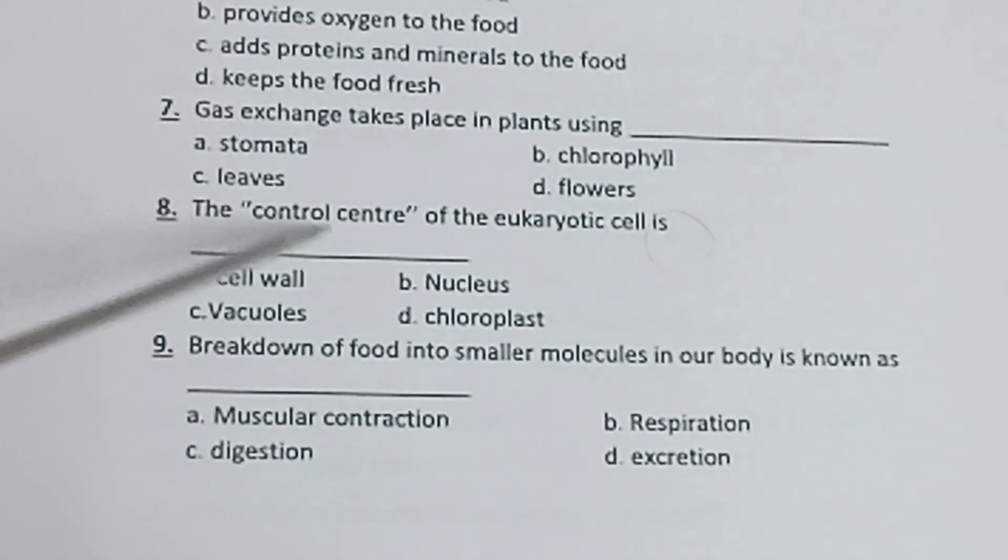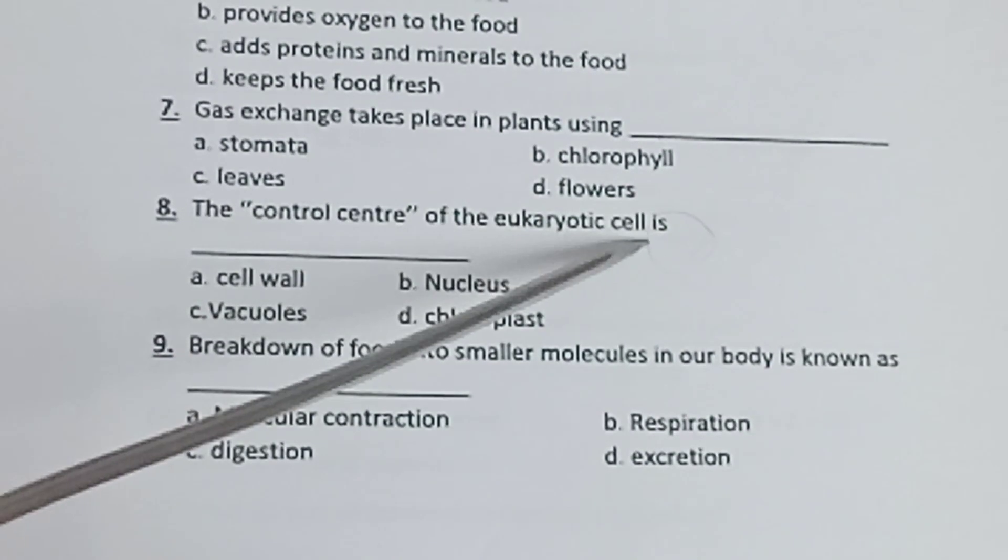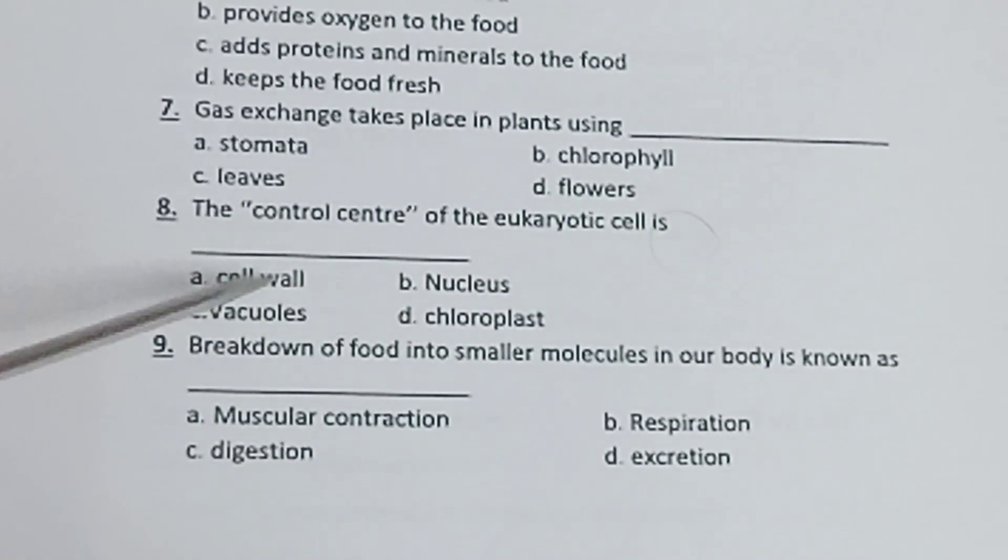Eighth one: The control center of the eukaryotic cell is - a) cell wall, b) nucleus, c) vacuoles, d) chloroplast.